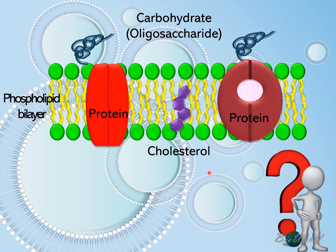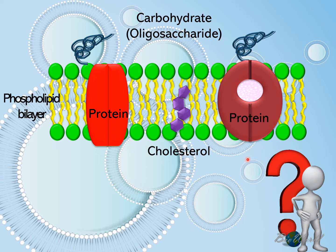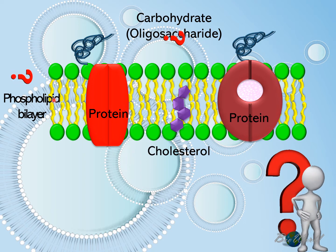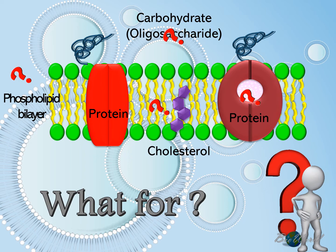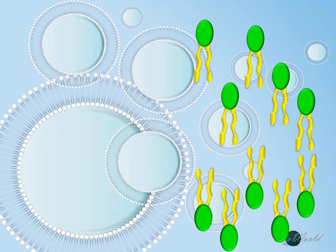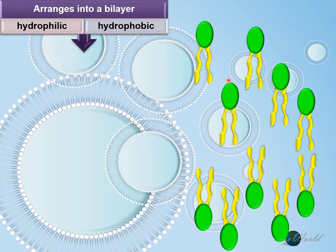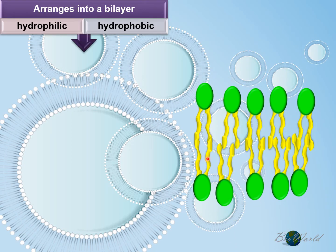We are now familiar with the structure of the fluid mosaic model as well as the reasons why it is called fluid and mosaic. But now the question is: what are the phospholipid bilayer, the carbohydrate, the cholesterol, and the proteins for? Let's find out. We'll start with the role of the phospholipids. As you know, phospholipids are amphipathic. So the first role is to arrange in a bilayer when placed in an aqueous solution.